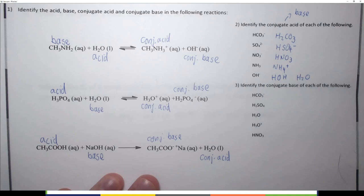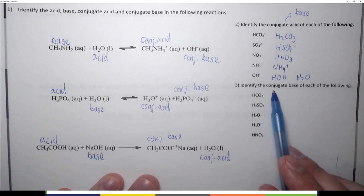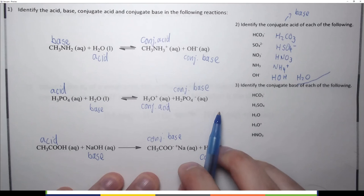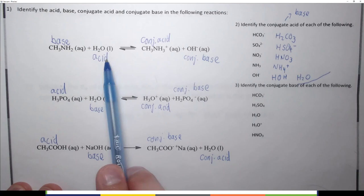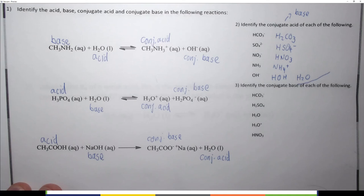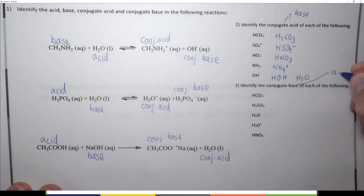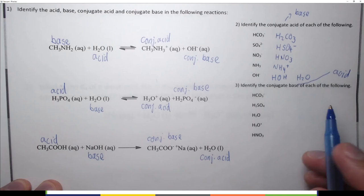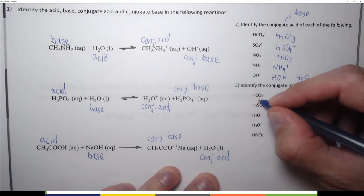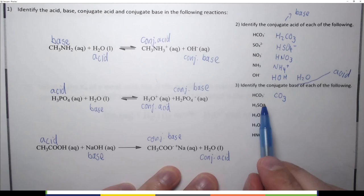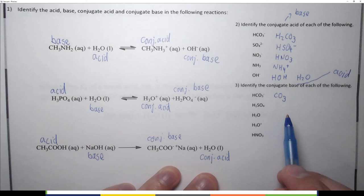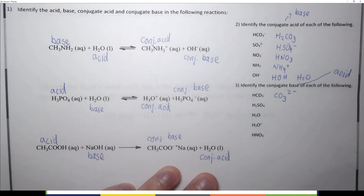Now: identify the conjugate base of each species. Acids have conjugate bases, so the molecule must behave as an acid — acids lose protons. For HCO₃⁻: remove H⁺ to get CO₃²⁻. It loses a positive charge, so the charge goes from −1 to −2. For H₂SO₄: remove H⁺ to get HSO₄⁻; when it loses a positive charge it gains a negative charge.